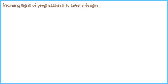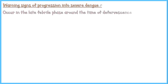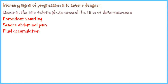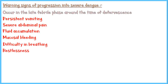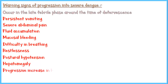Warning signs begin to appear around the time of defervescence. These include persistent vomiting, severe abdominal pain, fluid accumulation in spaces like the pleural and peritoneal cavity, mucosal bleeding, difficulty in breathing, restlessness, postural hypotension, hepatomegaly, and progressive increase in hematocrit due to hemoconcentration. Clinicians should always monitor patients with dengue for these warning signs and provide appropriate supportive care to reduce the risk of developing hypovolemic shock.